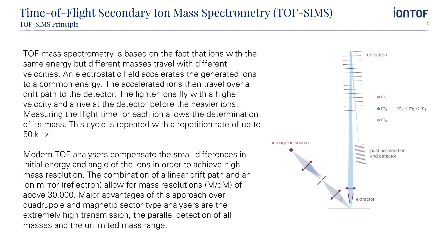Modern TOF analyzers compensate for small differences in initial energy and angle of the ions in order to achieve high mass resolution. The combination of a linear drift path and an ion mirror — reflectron — allows for resolutions of up to 30,000. Major advantages of this approach over quadrupole and magnetic sector type analyzers are the extremely high transmission, the parallel detection of all masses, and the unlimited mass range.